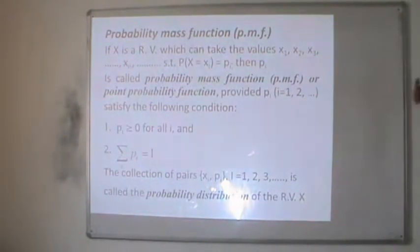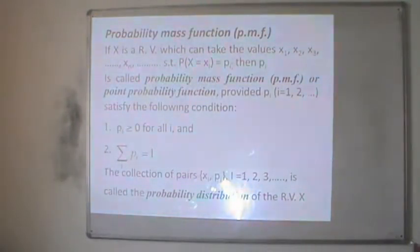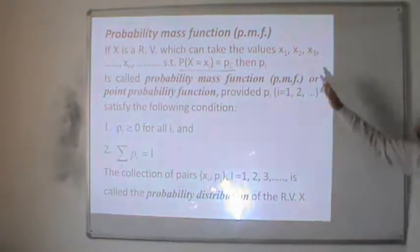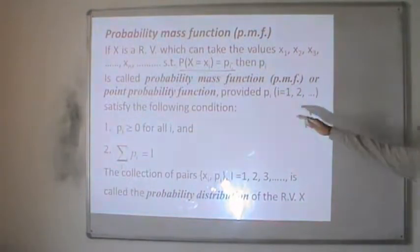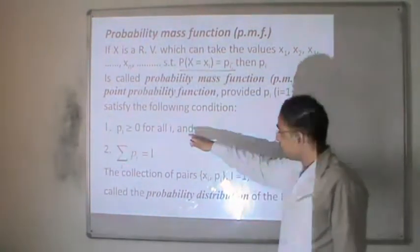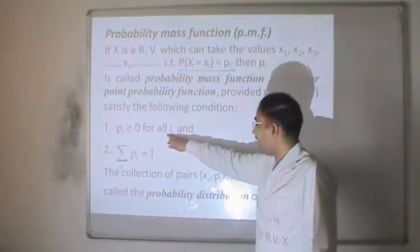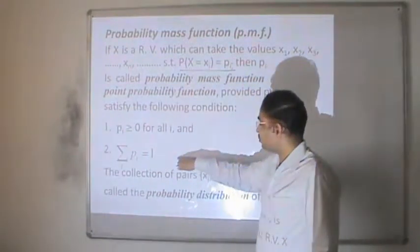The next definition is probability mass function, related to discrete random variables. If x is a random variable which can take the values x1, x2, x3, and so on, such that the probability of x equals xi is pi, then pi is called the probability mass function, or point probability function, provided pi satisfies the following conditions: first, pi is always greater than or equal to zero for every value of i; and second, the summation over i of the probability mass function is equal to 1.